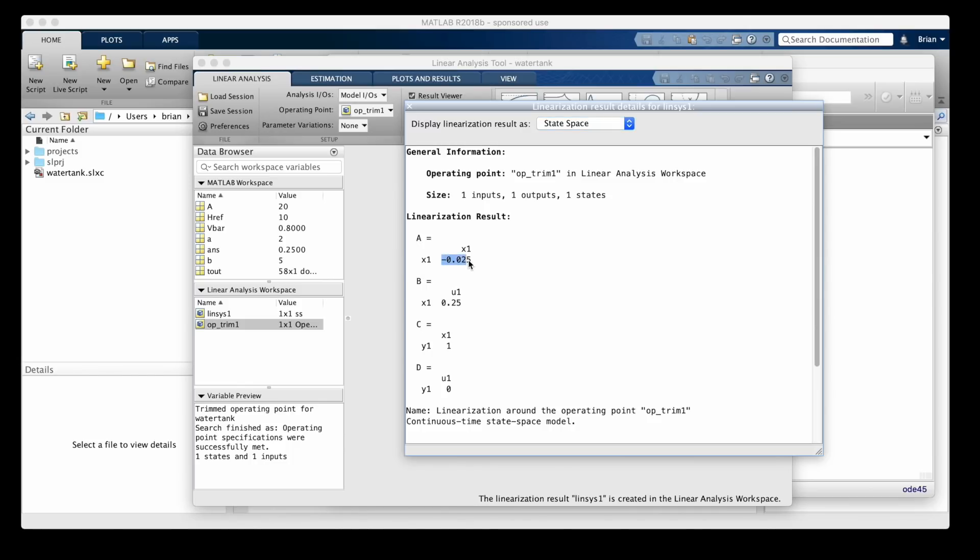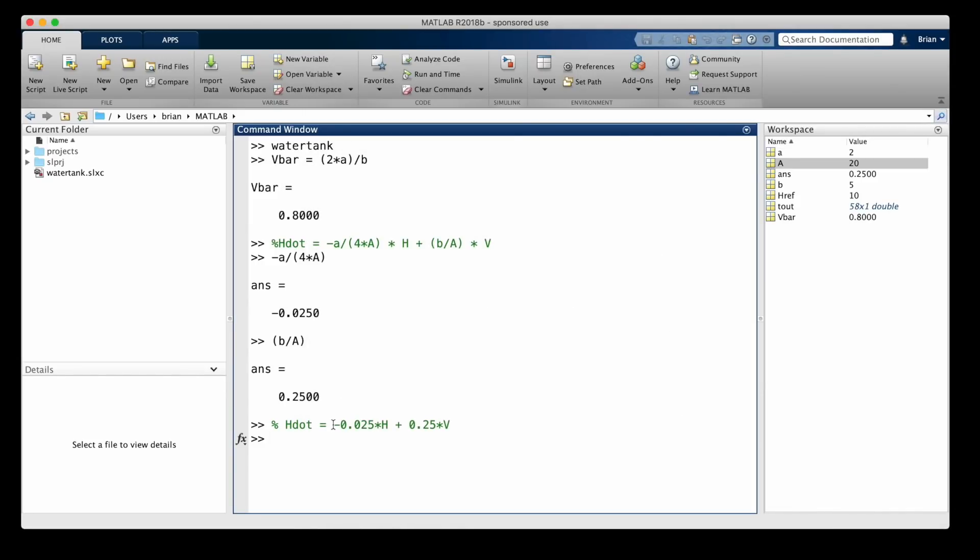The A matrix turns out to be minus 0.025, and the B matrix is 0.25. Since the output of the model is also the state variable, the C matrix is 1, and since there's no feedforward in the system, the D matrix is 0. And this is the exact same result as our hand calculation.